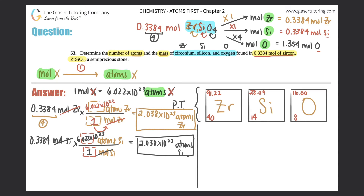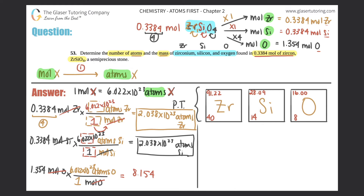And now the same thing for oxygen. 1.354 moles of oxygen — moles of oxygen on the bottom, atoms of oxygen on top. One mole equals 6.022 × 10²³. Cancel out moles of oxygen. So 1.354 times 6.022 × 10²³ gives 8.154 × 10²³ atoms of oxygen. Those are the three answers for individual atoms.